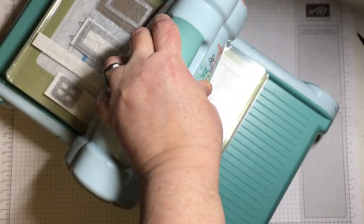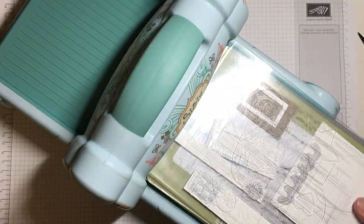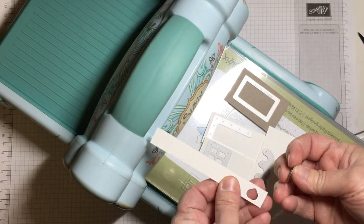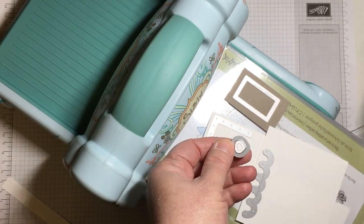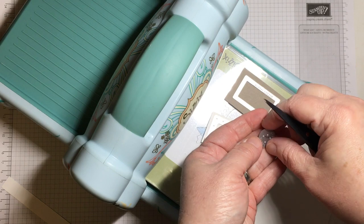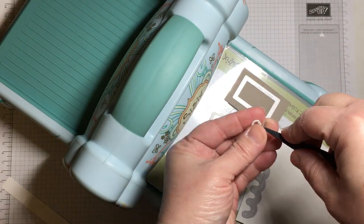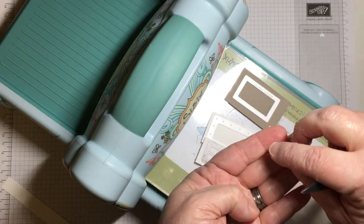I'm working with Home Sweet Home Thinlits dies and Sweet Home Stamp Set, both from Stampin' Up. They were previously in the holiday catalog and in a bundle. However, you can still purchase them as they've been carried over, but they're no longer able to be purchased as a bundle.